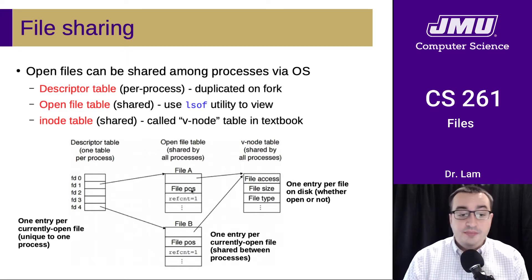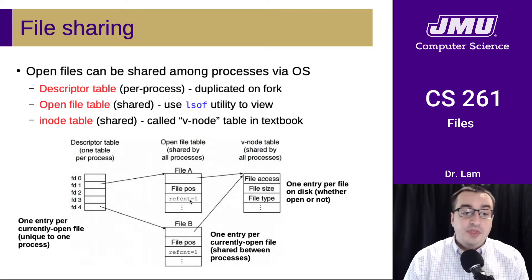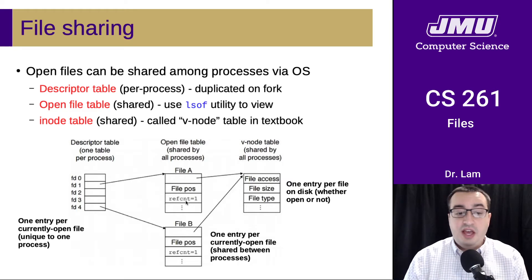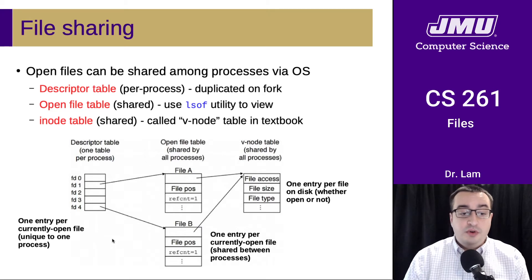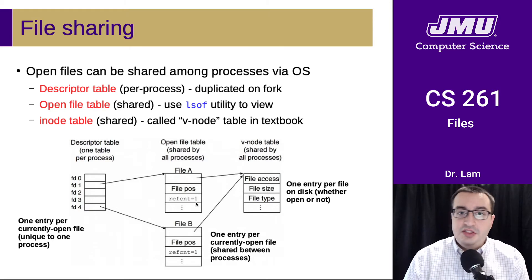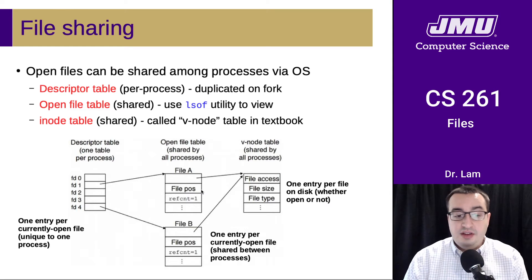We can change the file position by seeking. The open file table also contains the number of references to that open file. So if more than one process has that particular file open, this count will be higher than one. For instance, if a process had a file open and then forked, there would be both a parent and a child process with that file open — there will be two pointers to the entry and the reference count will be two. Any operation in either process may affect the read position and the contents of the file.